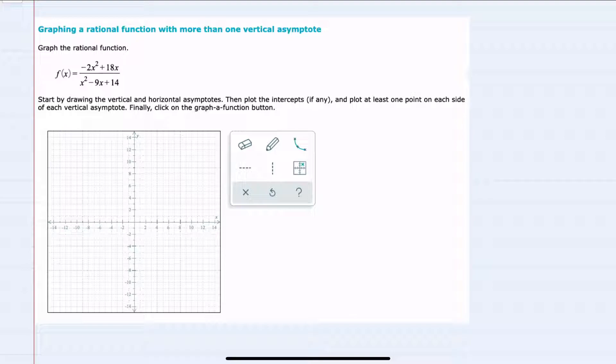We're asked here to graph f of x, and we're going to start with vertical and horizontal asymptotes, look at intercepts if there are any, and then plot a couple of points, one on each side of the vertical asymptote.